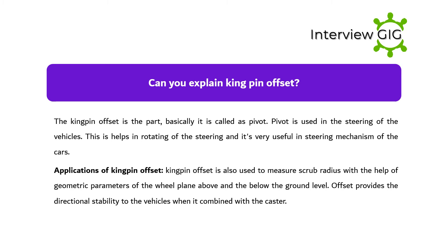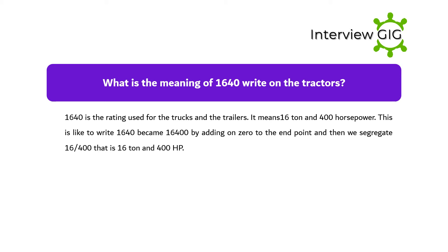Can you explain kingpin offset? The kingpin offset is basically called a pivot. A pivot is used in the steering of vehicles; it helps in rotating the steering and is very useful in the steering mechanism of cars. Kingpin offset is also used to measure scrub radius with the help of geometric parameters of the wheel plane above and below the ground level. It provides directional stability to vehicles when combined with the caster.